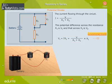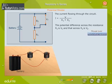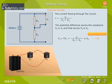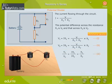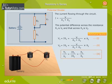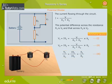Equation 1: V1 is equal to IR1, that is equal to V by R1 plus R2, into R1. Equation 2: V2 is equal to IR2, that is equal to V by R1 plus R2, into R2. Equation 3: V1 by V2 is equal to IR1 by IR2, that is equal to R1 by R2. Equation 3 shows that the potential difference across a resistance is directly proportional to the resistance.